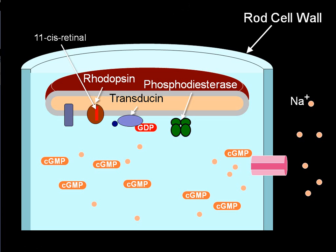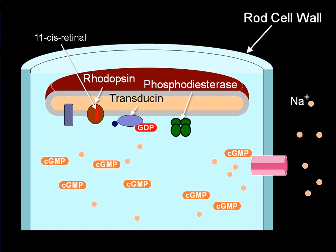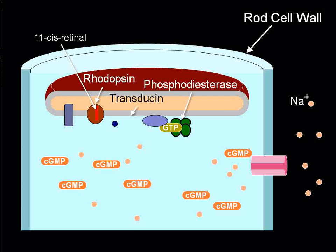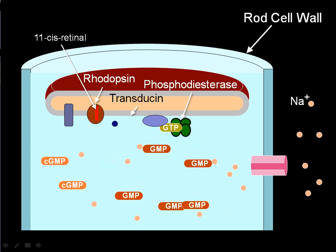That causes this rhodopsin molecule to open up a binding site for this transducin molecule sitting next to it. On that transducin molecule there's another molecule called GDP attached to it, and it causes the GDP to fall off the transducin. Then the transducin has the ability to bind onto yet another protein called phosphodiesterase — this green thing right here. And this whole contraption then has the ability to cut these cyclic GMPs and turn them into regular GMPs, as opposed to cyclic GMPs.